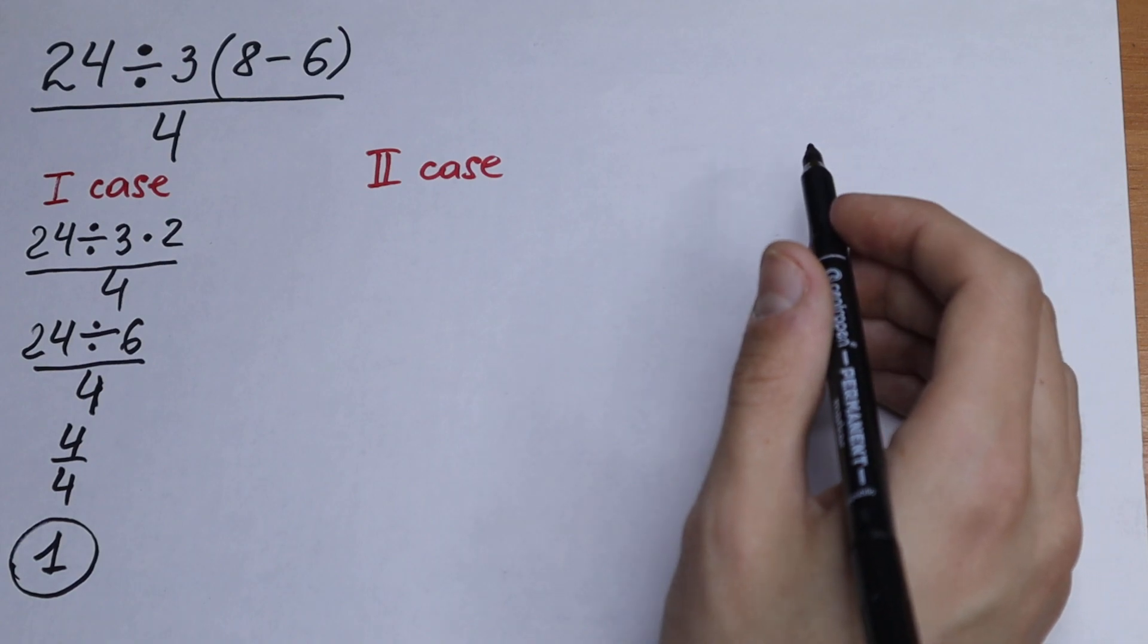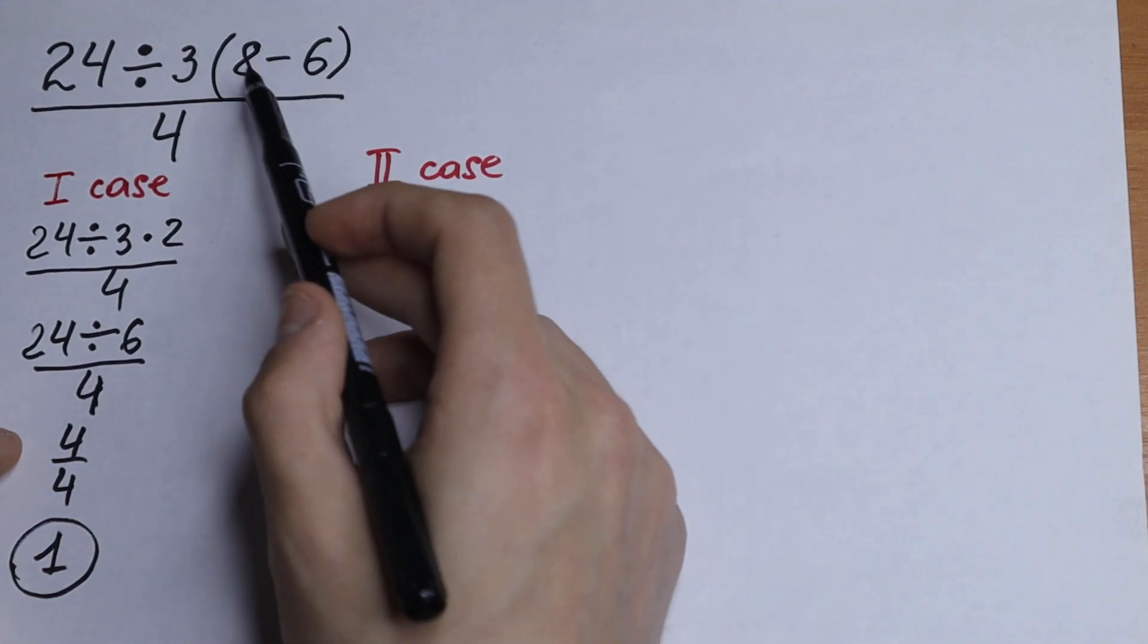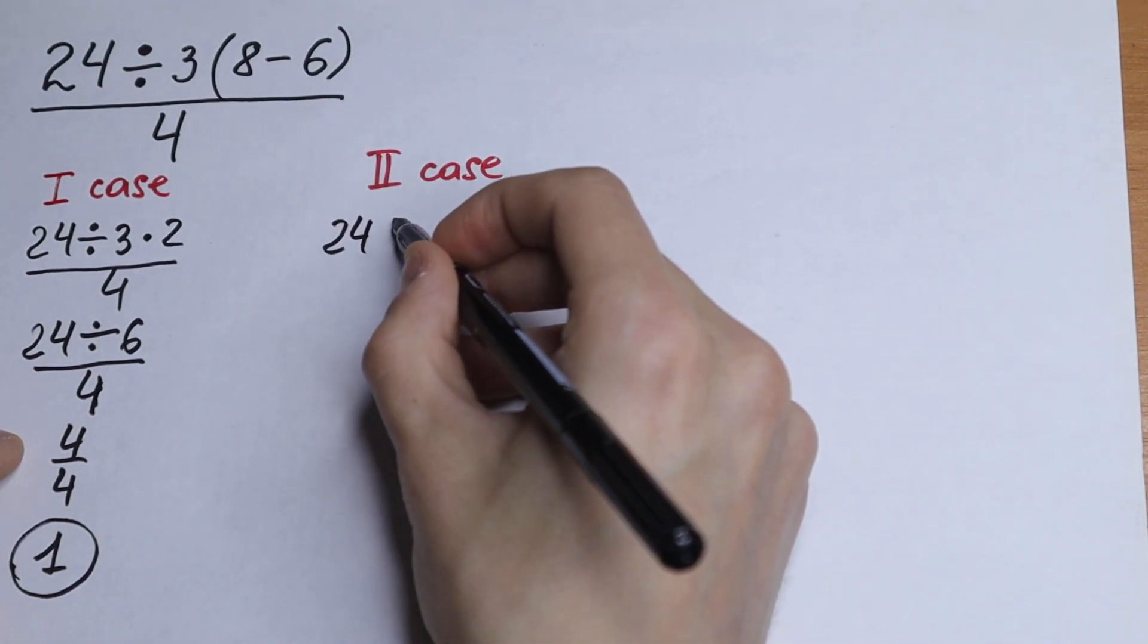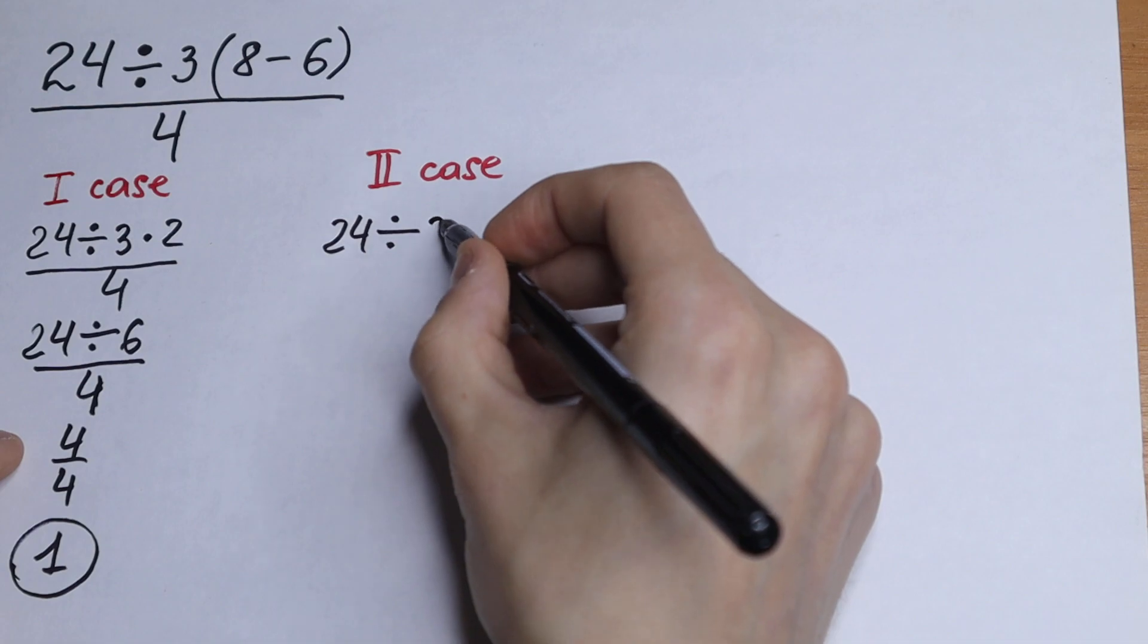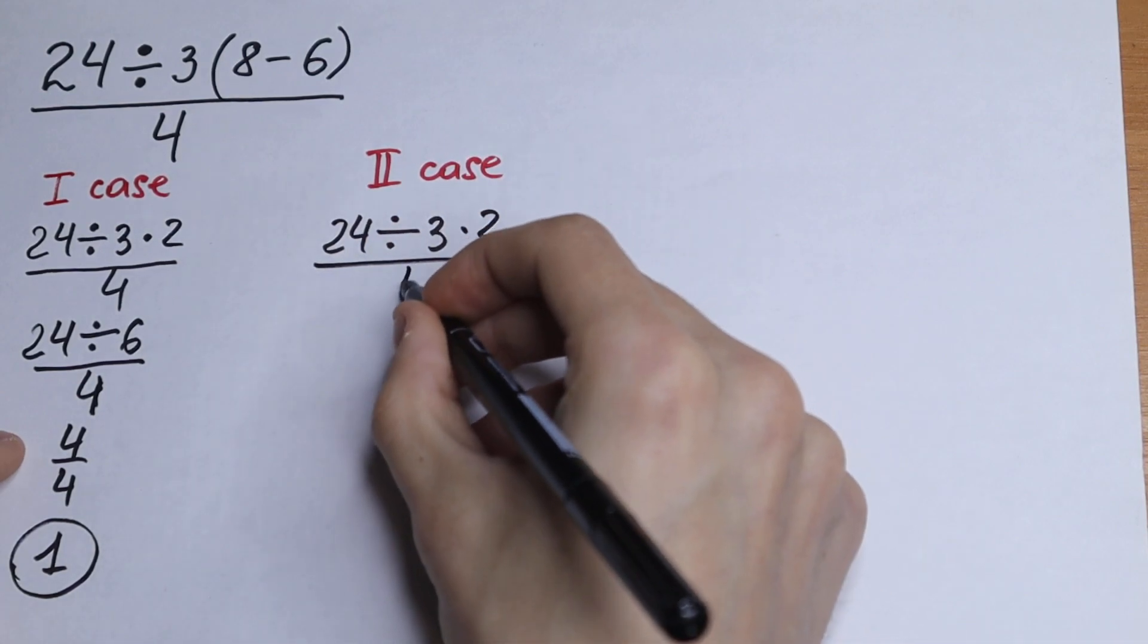But take a look right here. Let's solve this in another way. So of course the first step is our parentheses. So we will have the same thing. 24 divided by 3 times 2 over 4.